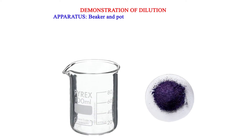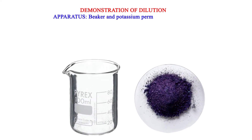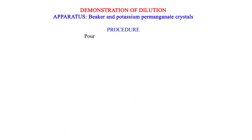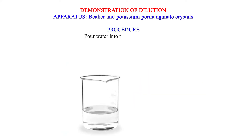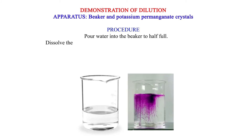Demonstration of dilution. Apparatus: beaker and potassium permanganate crystals. Procedure: pour water into the beaker to half full. Dissolve the potassium permanganate crystals until the solution is purple.